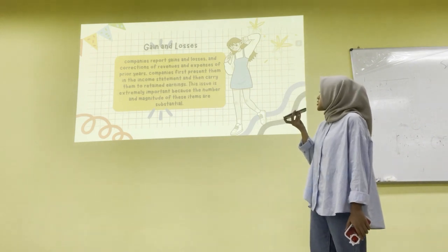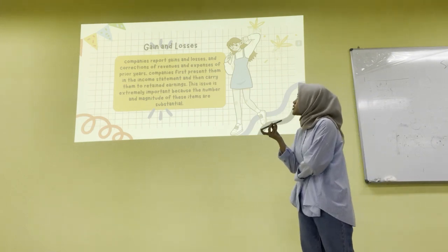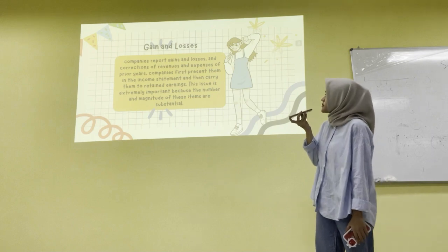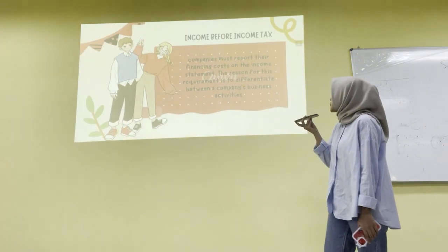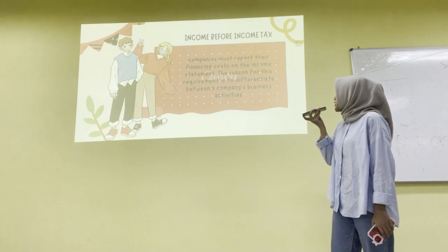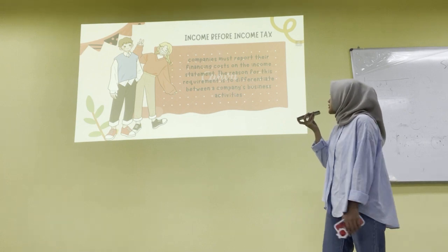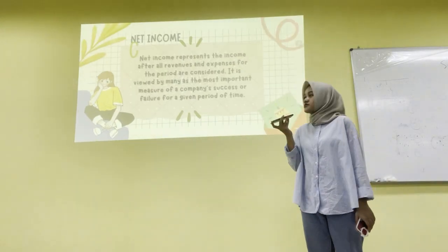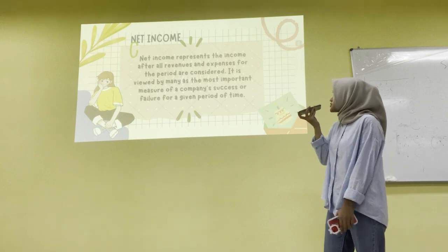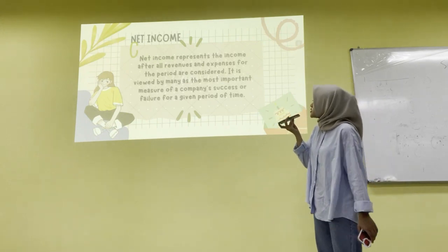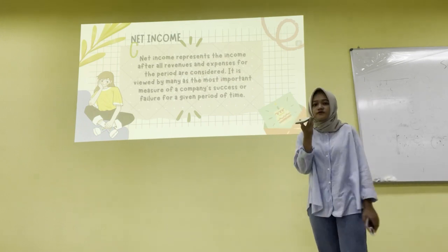Companies report gains and losses, and corrections of revenues and expenses of prior years, first in the income statement and then carry them to retained earnings. For income before income tax, companies must report their financing costs on the income statement to differentiate between a company's business activities. Net income represents the income after all revenues and expenses for the period are considered, and it is viewed by many as the most important measure of a company's success or failure for a given period.